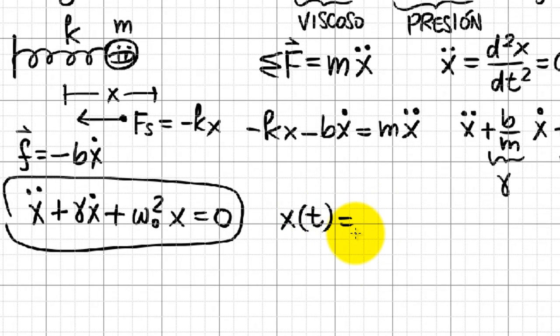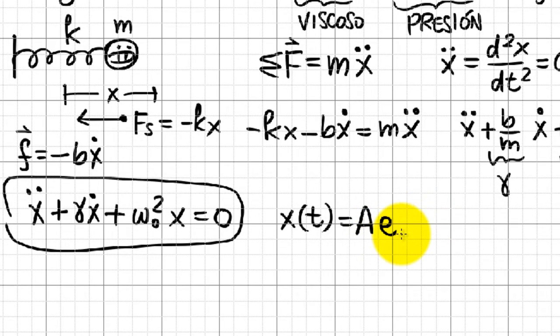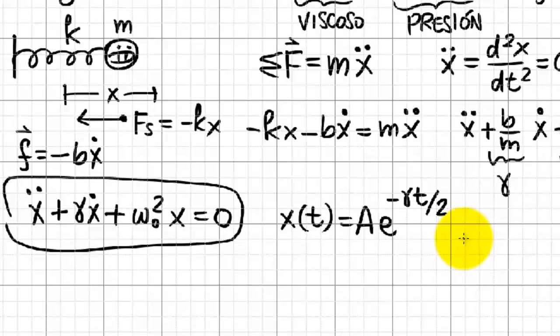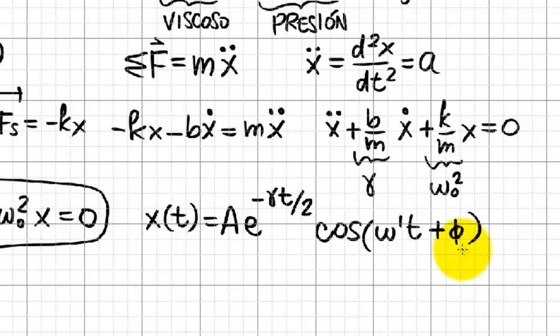This is something like the normal oscillator with the amplitude A, and now it has an exponential term which is damping the oscillator, it's slowing it, and the oscillating term, as you remember.